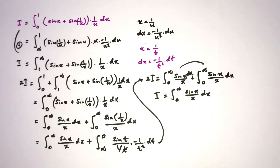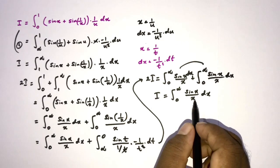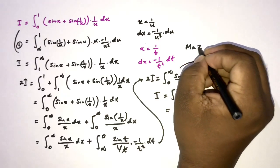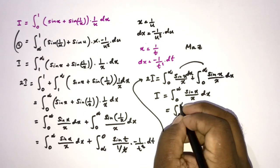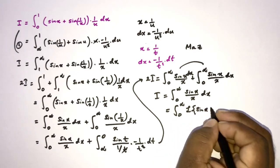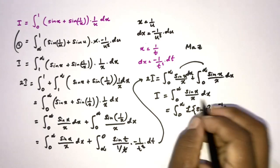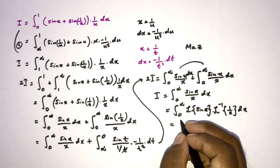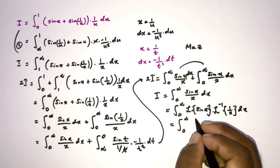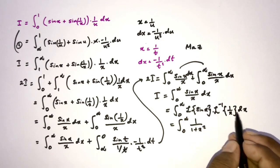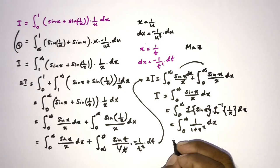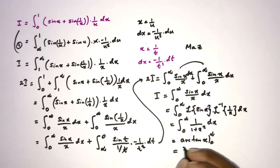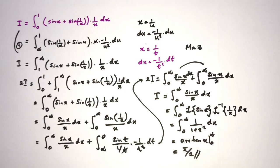This is the well-known Dirichlet integral. We evaluate it using the Parseval/Mellin identity: the integral from 0 to infinity of the Laplace transform of sin(x) times the inverse Laplace transform of (1/x) dx. The Laplace transform of sin(x) is 1/(1+x²), and the inverse Laplace transform of (1/x) is 1. So we integrate 1/(1+x²) from 0 to infinity, which equals arctan(x) evaluated from 0 to infinity, giving π/2. Thank you for watching.